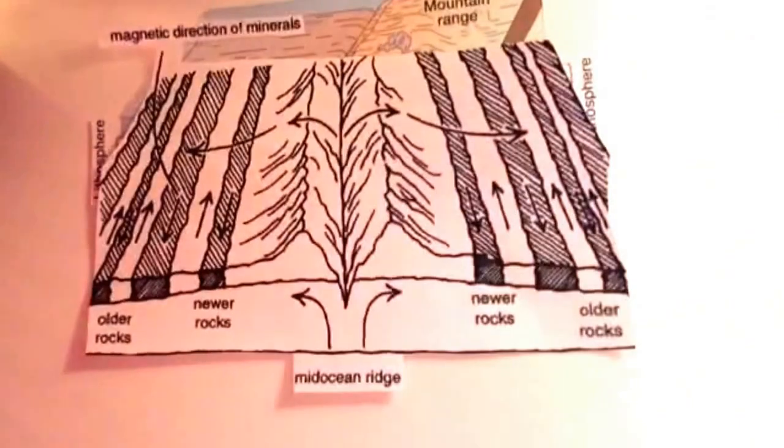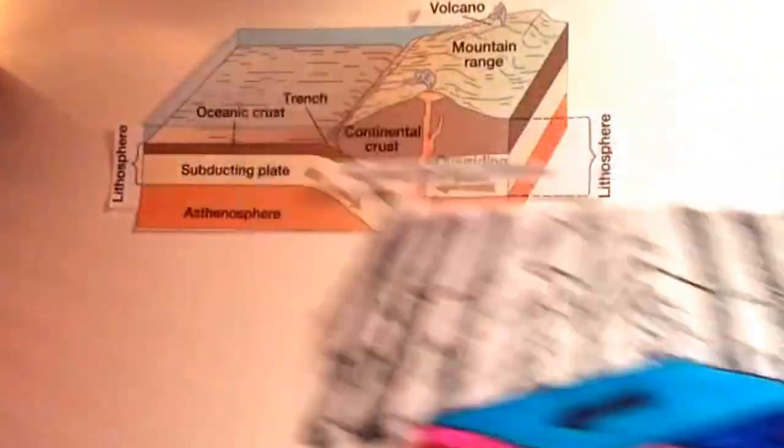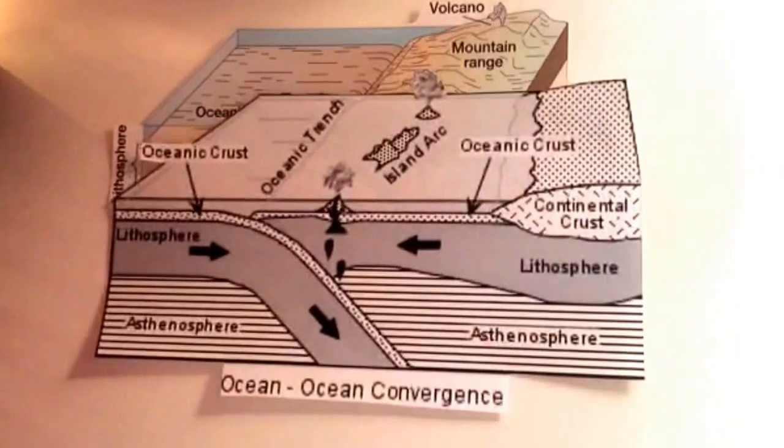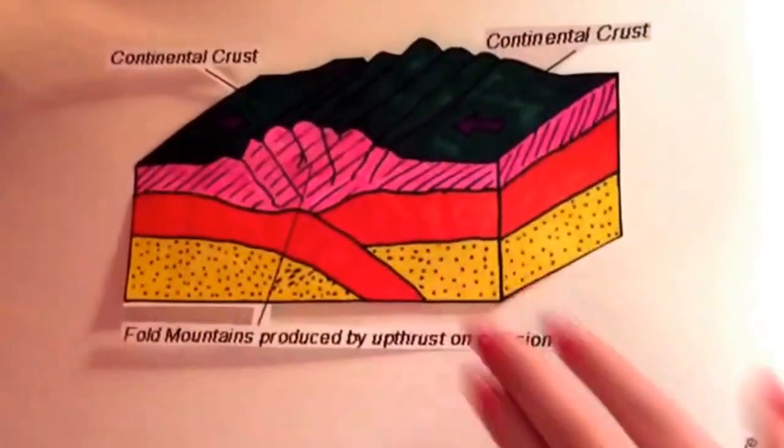There are three types of plate boundaries: Convergent, Divergent, and Transform. First, we will be discussing the convergent plate boundary. There are three different convergent plate boundaries—oceanic-to-continental, oceanic-to-oceanic, and continental-to-continental. But today, we will only be talking about continental-to-continental.